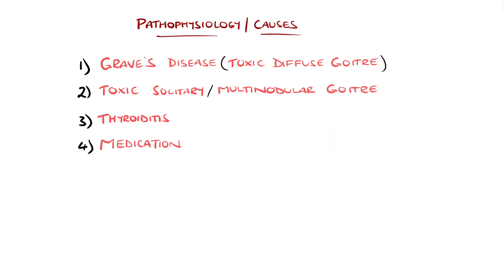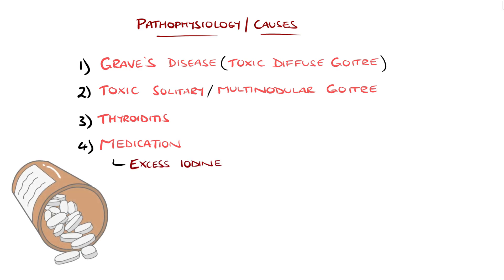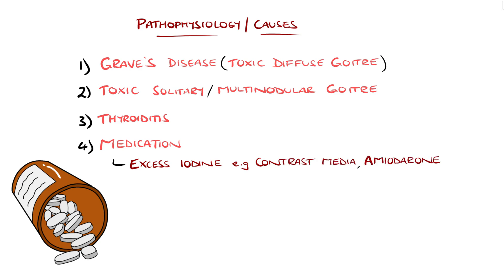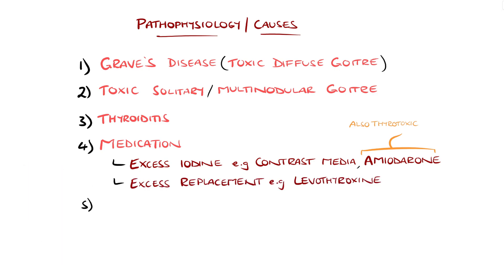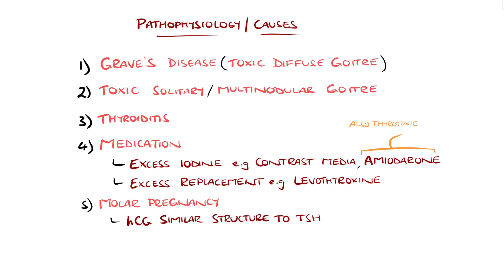Excess iodine allows the thyroid gland to produce more hormone — for example, contrast media. Amiodarone also contains iodine and can lead to hyperthyroidism, but due to its cytotoxic effect on thyroid cells, can also cause hypothyroidism. Excess thyroid hormone replacement with levothyroxine can be a cause of thyrotoxicosis. Human chorionic gonadotropin, HCG, is similar in structure to TSH and can cross-react with TSH receptors when found in large quantities, such as during molar pregnancies.